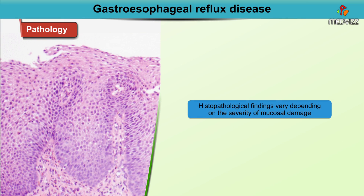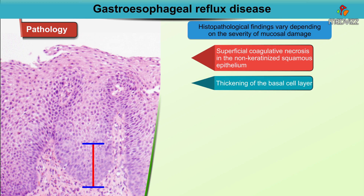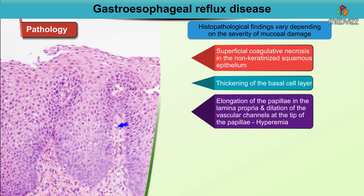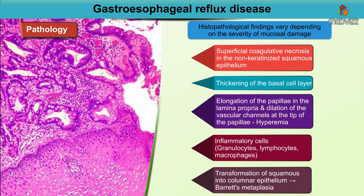Histopathological findings vary depending on the severity of mucosal damage. These include superficial coagulative necrosis in the non-keratinized squamous epithelium, thickening of the basal cell layer, elongation of the papilla in the lamina propria, dilation of vascular channels at the tip of the papilla causing hyperemia, inflammatory cells with granulocytes, lymphocytes and macrophages, and transformation of the squamous into columnar epithelium causing Barrett's metaplasia. These are all histological findings common in long-standing or chronic GERD.